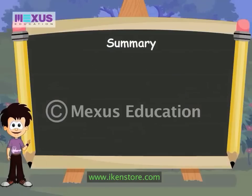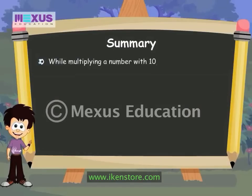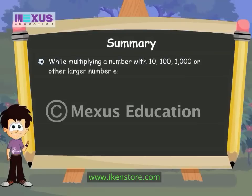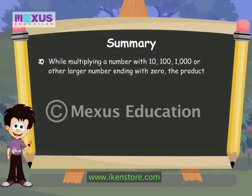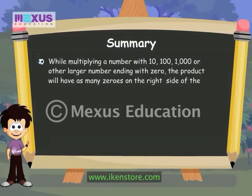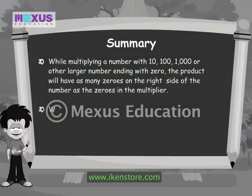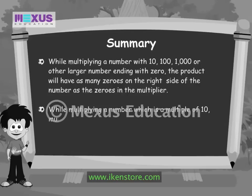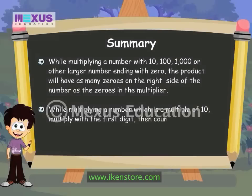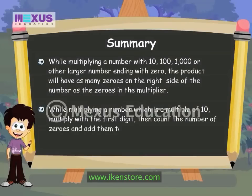Here's what we just learnt. While multiplying a number with 10, 100, 1000 or another larger number, the product will have as many zeros on the right side of the number as the zeros in the multiplier. While multiplying a number which is a multiple of 10, multiply with the first digit, then count the number of zeros and add them to the right of the number that you get.